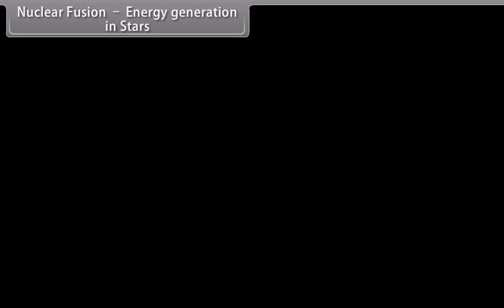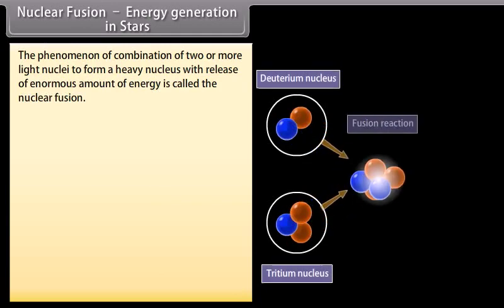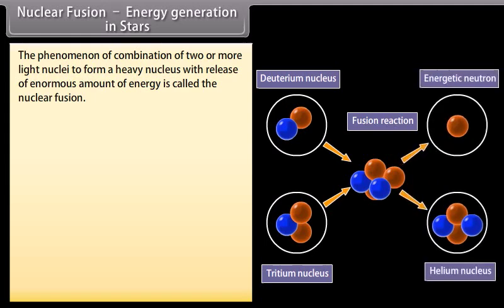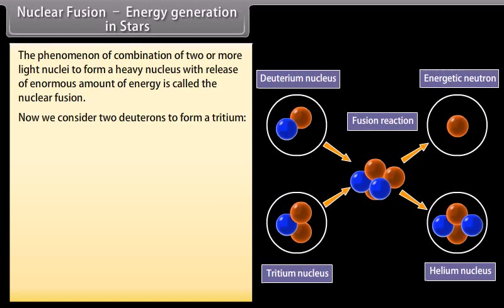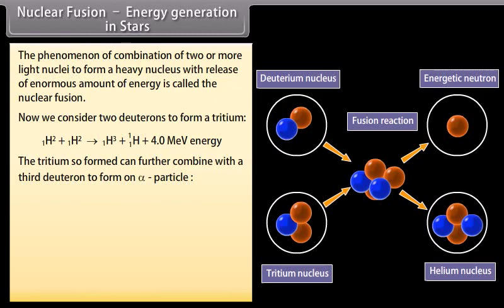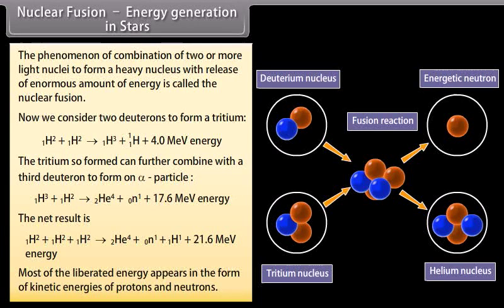Nuclear fusion: Energy generation in stars. The phenomenon of combination of two or more light nuclei to form a heavy nucleus with release of enormous amount of energy is called the nuclear fusion. Now we consider two deuterons to form a tritium. The tritium so formed can further combine with the third neutron to form an alpha particle. The net result is shown. Most of the liberated energy appears in the form of kinetic energies of protons and neutrons.